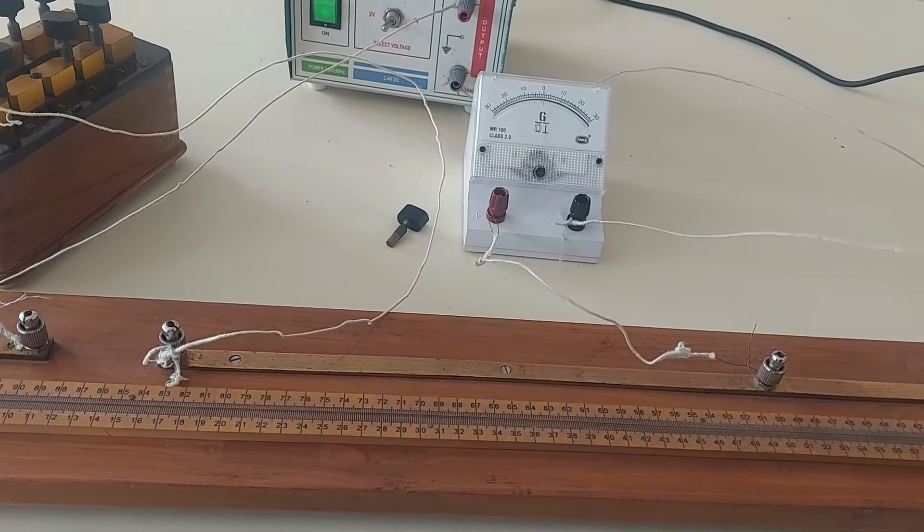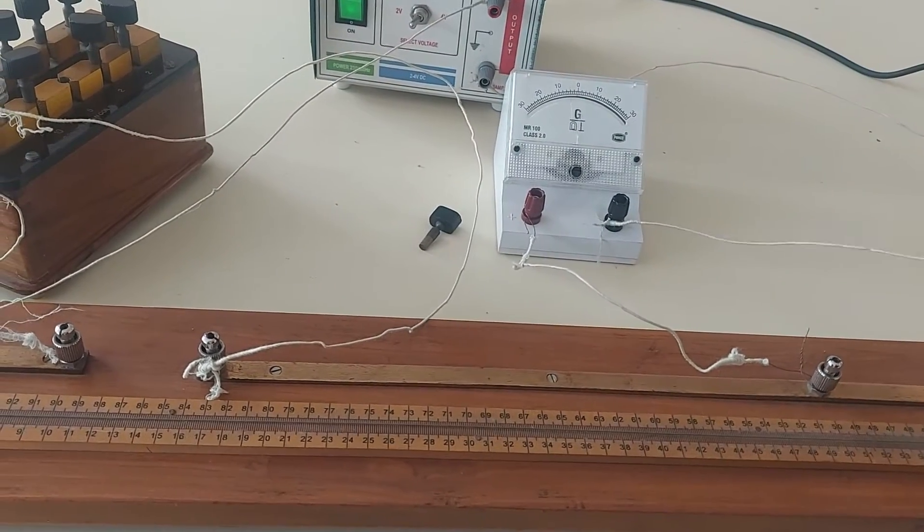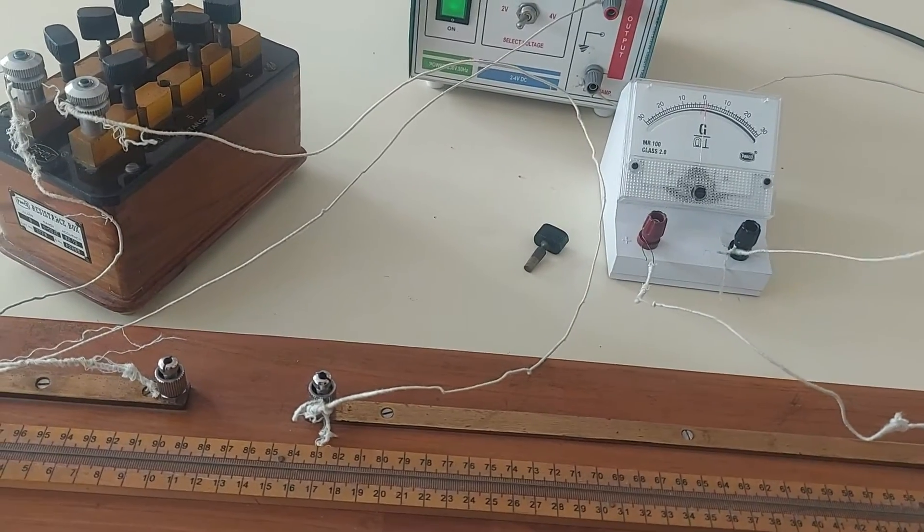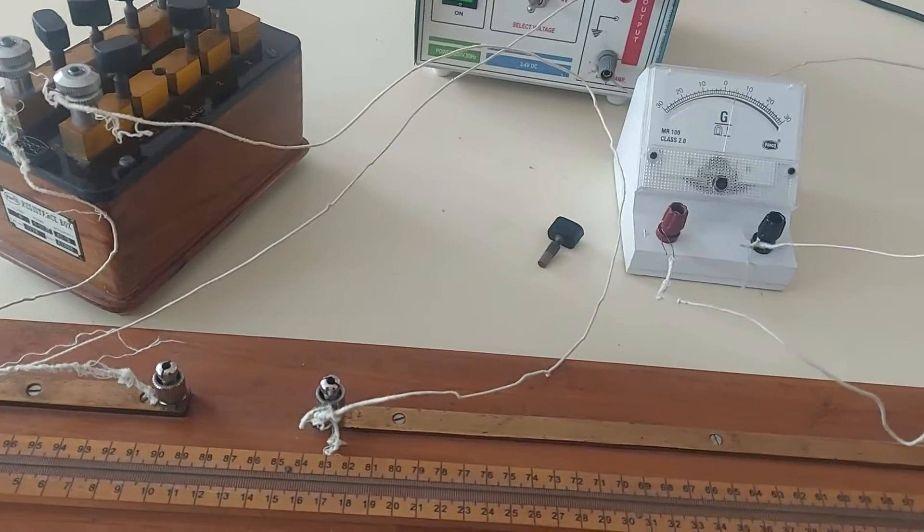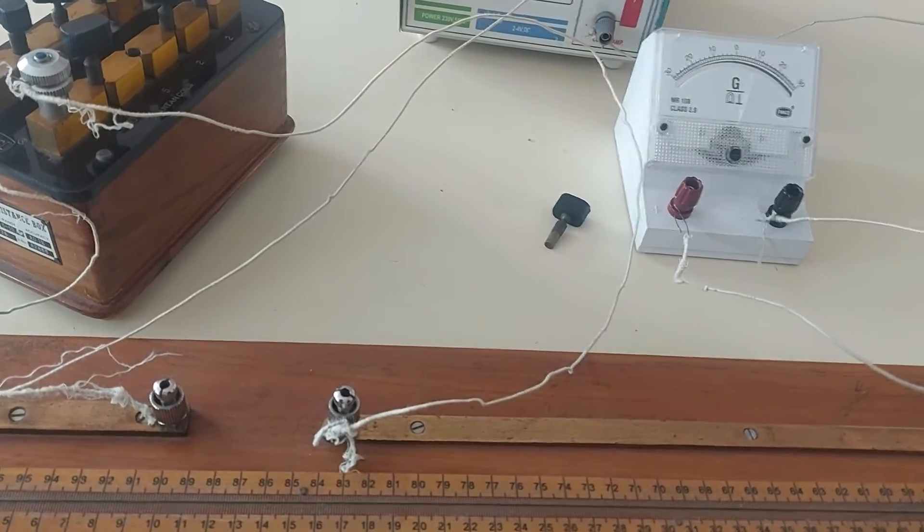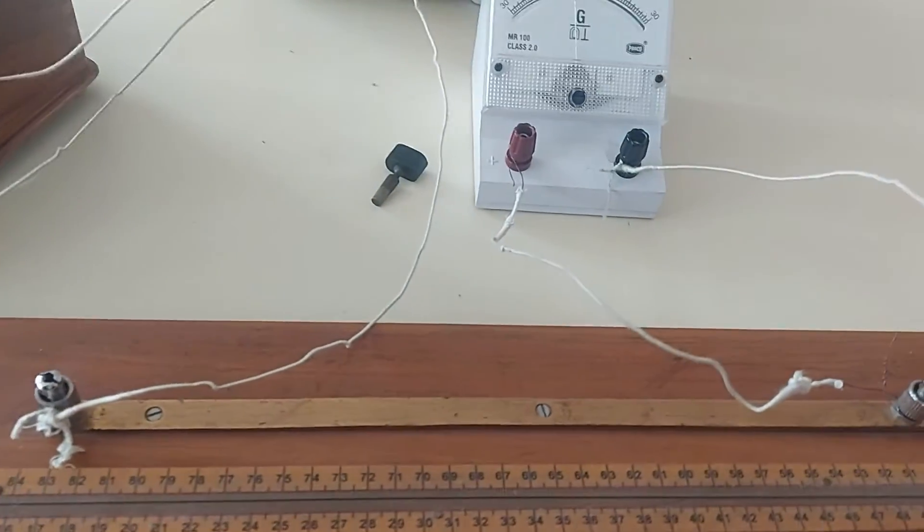And on the left side, the deflection is on the left. Right side, the deflection is on the right. That is the first thing that you should check after setting up the circuit, that the deflection in the galvanometer when touched on the two ends of the wire is on two different sides, opposite sides.